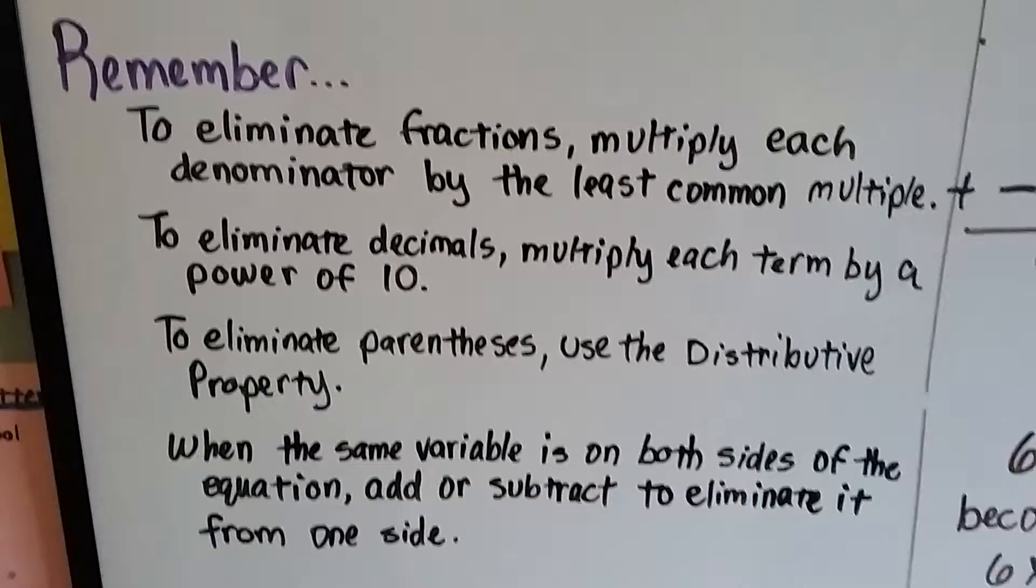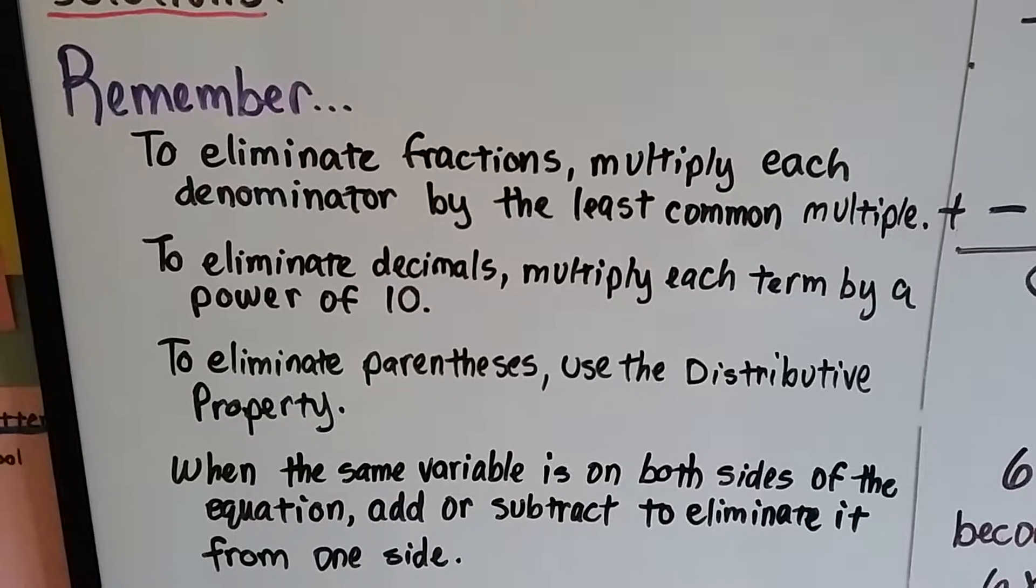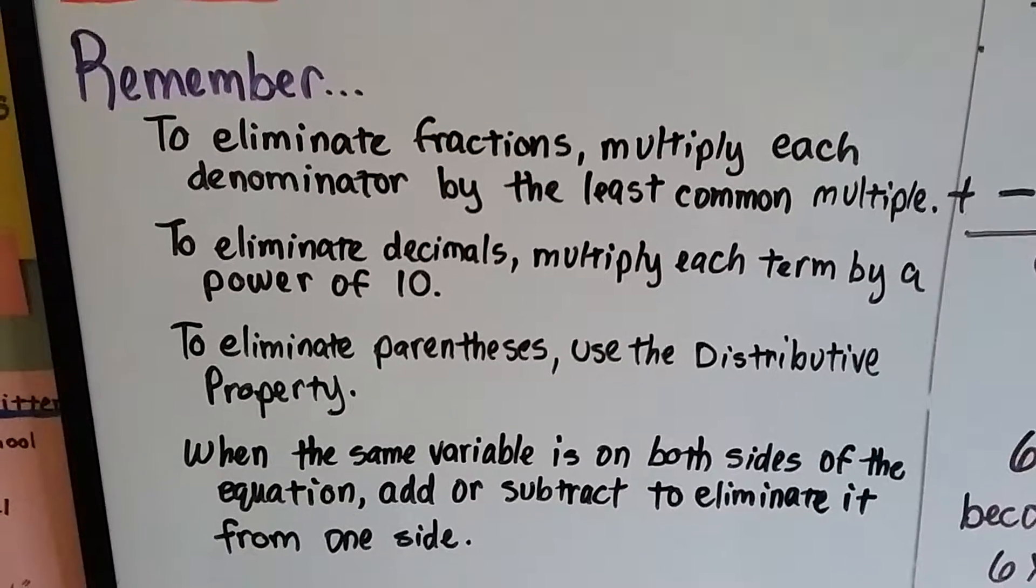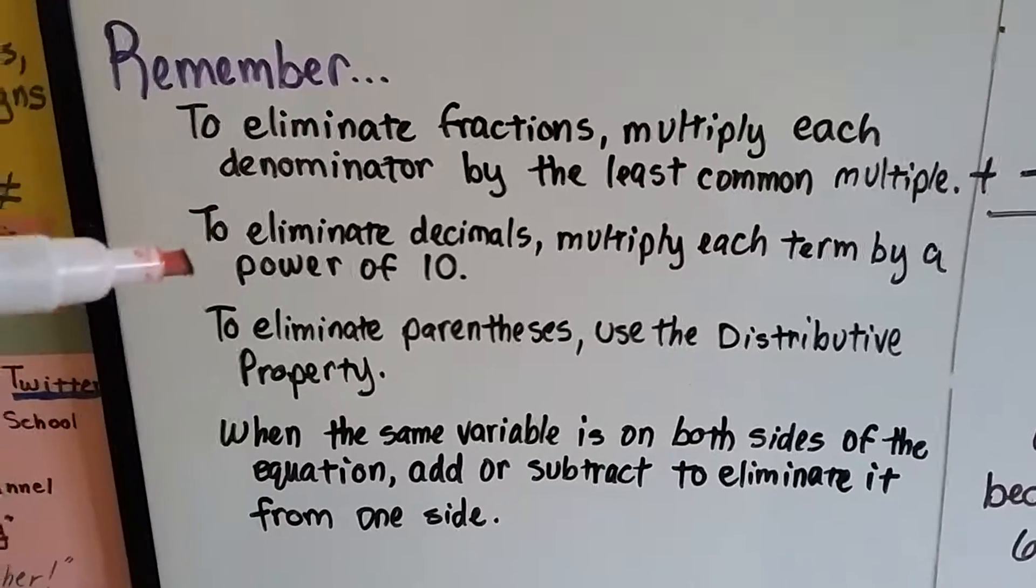To eliminate fractions you multiply each denominator by the least common multiple. To eliminate decimals we multiply each term by a power of 10 enough to get rid of the largest decimal place.